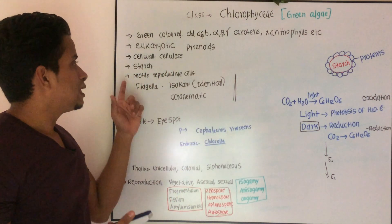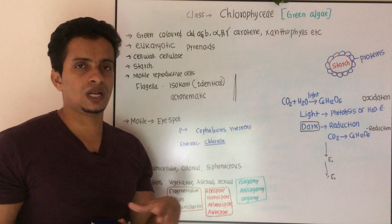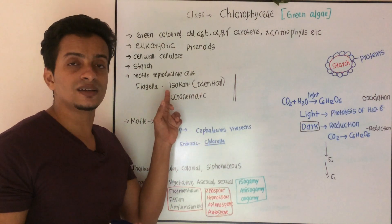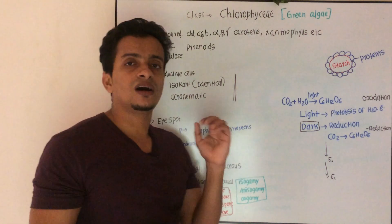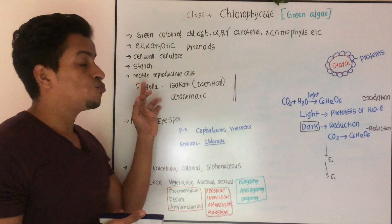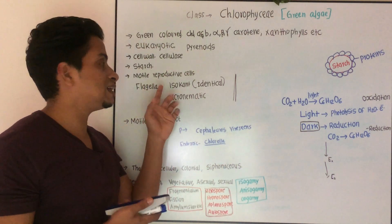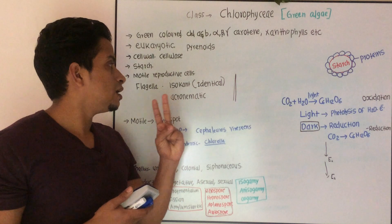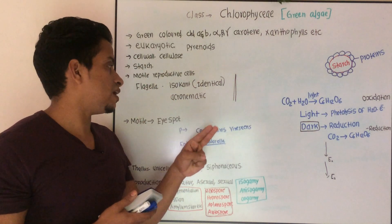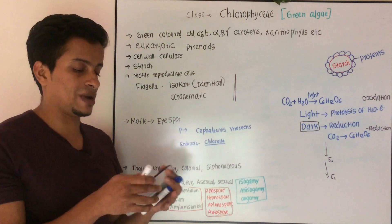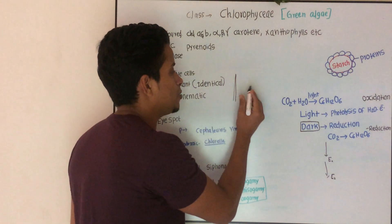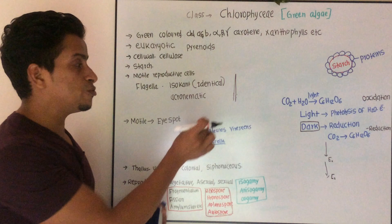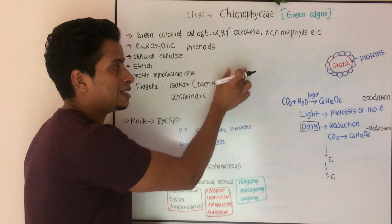You can see motile reproductive structures. If the reproductive structure possesses flagella, they are known as motile reproductive structures. The flagella are identical — technically called isokont flagella. They are acronematic, meaning without any lateral hairs, with a smooth and uniform appearance.